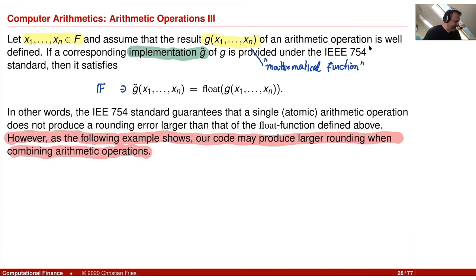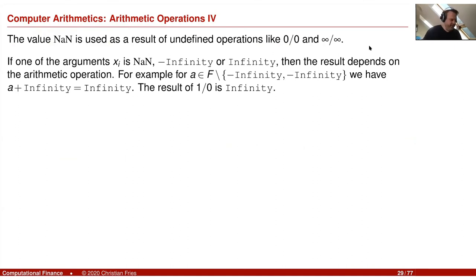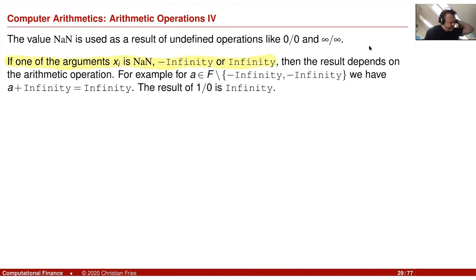There is another value that can be represented by the floating point encoding: not a number, which is some error value, and this can also be an input. What happens if you have infinity or not a number as arguments depends on the implementation, and you should read the documentation. Maybe we should have a small computer experiment — explore what happens if we play around with these special values.